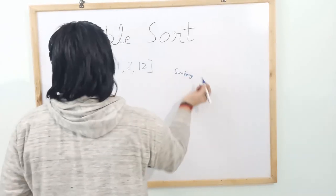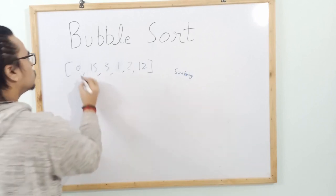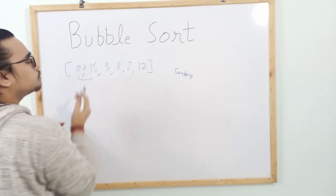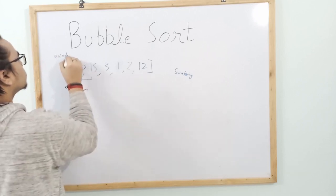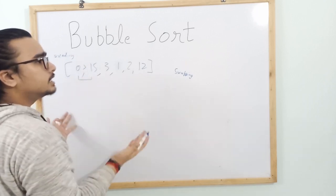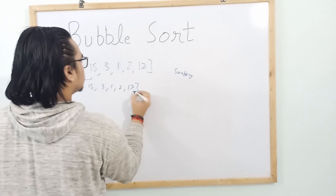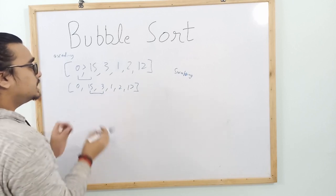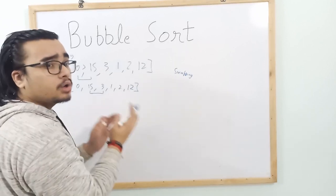What happens is we take pairs of elements. First we take the first two elements and compare whether the first element is smaller than the second. Since we are sorting in ascending order, if the first element is already smaller, nothing will happen — no change in the list. Then we compare the second element with the third. The intention is to push the largest number to the very end.